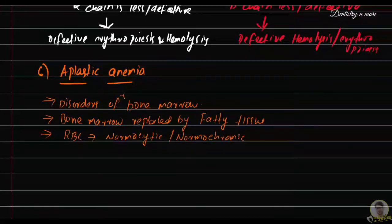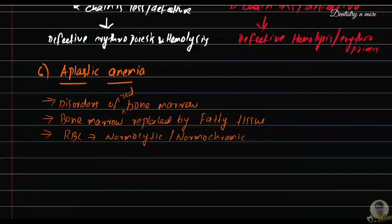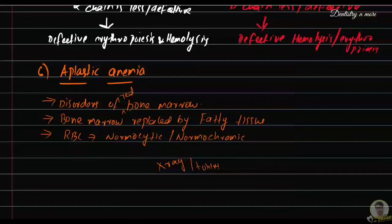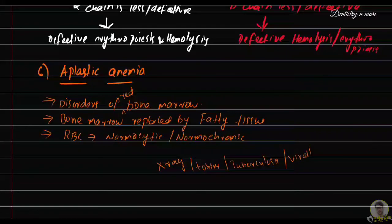Aplastic anemia is due to disorders of the red bone marrow, which is reduced and replaced by fatty tissue. This bone marrow disorder occurs due to repeated exposure to X-rays, toxins like benzene or radium, tuberculosis, or viral infections such as HIV or hepatitis.